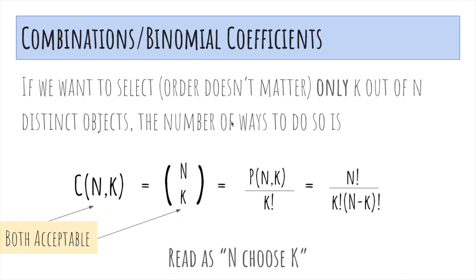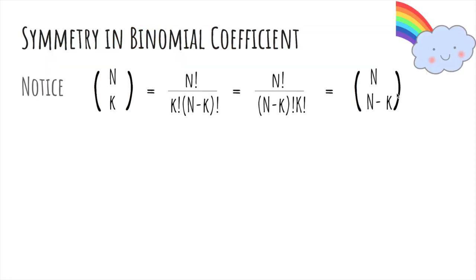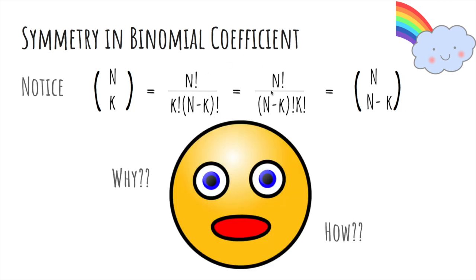So if we want to select k out of n objects where order does not matter, this is called n choose k, and these are both acceptable notations. So what we do is we pick k of them where order matters, and then we divide by k factorial because we have over counting. So if you plugged in the formula, you would actually see that n choose k and n choose n minus k are the same. Why is this true?